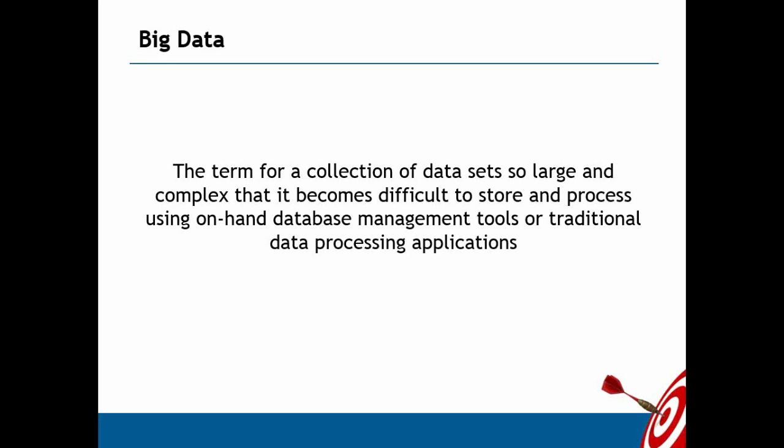Unstructured data means anything other than structured and semi-structured — like text messages, audios, videos, pictures, images, data generated by cell phones, data generated by flights, data generated by signaling systems, and skybox images. All this comes under unstructured data, which is complex data. Traditional systems cannot process it efficiently; image processing makes systems slow, needs a lot of memory, and is beyond the capability of a single physical machine.